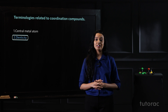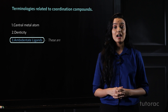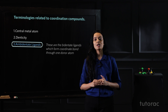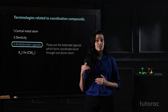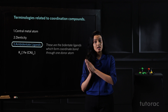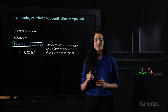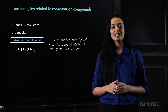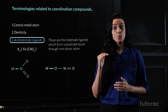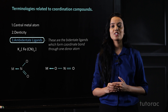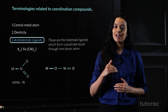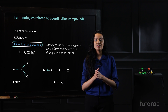The next category is ambidentate ligands. These are ligands which can form a coordinate bond through more than one donor atom but do so through only one at a time. For example, cyanide ion (CN⁻) in K4[Fe(CN)6] forms a bond through the carbon atom, but it has two donor sites — it can bond through carbon or nitrogen. Similarly, NO2⁻ can bond through nitrogen (called nitro, written as nitrito-N) or through oxygen (called nitrito-O). These are ambidentate ligands.